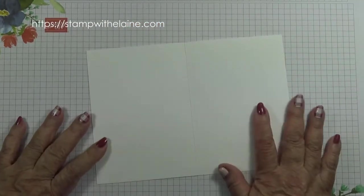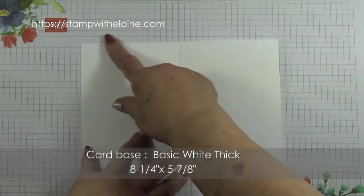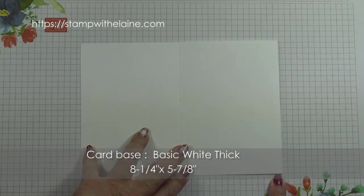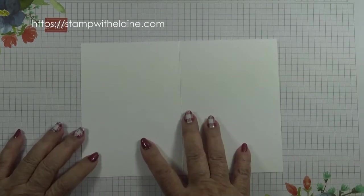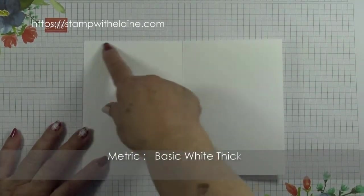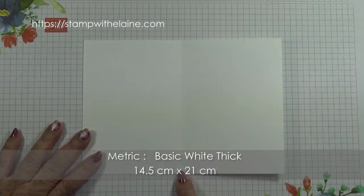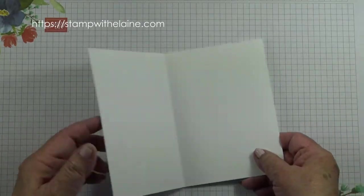I'm using basic white thick cardstock for my card base and this is cut at eight and a quarter inches by five and seven eighths. In metric this measures 14.5 by 21 centimeters and the long side you score at four and one eighth or 10.5 centimeters.